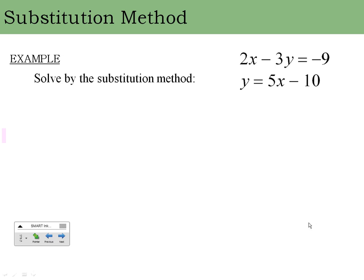The third way to solve systems of equations with two variables is called the substitution method. We take what one equation equals and plug it into the other one. This requires having a situation where we have y equals something. If we don't have y equals or x equals something, we'll have to start off by solving for one of our variables.